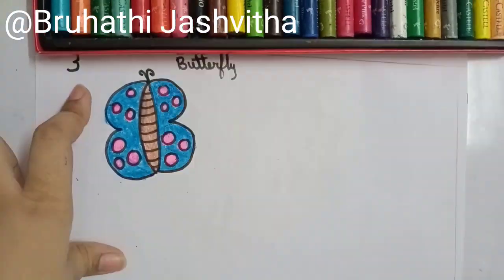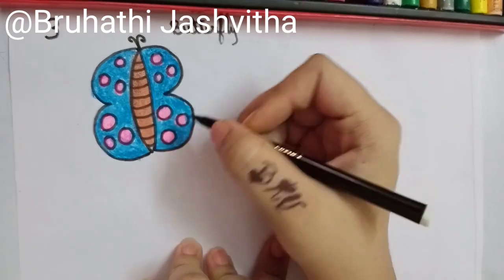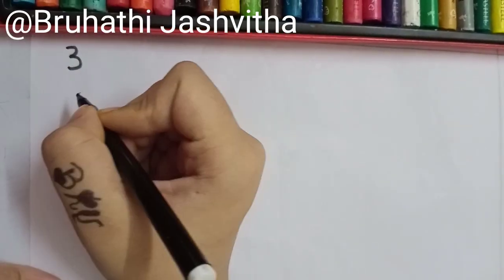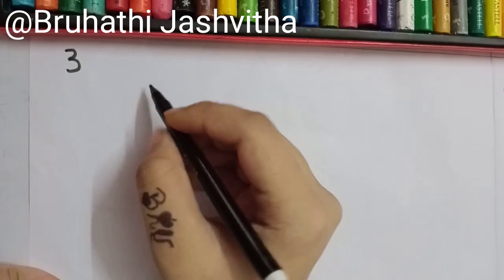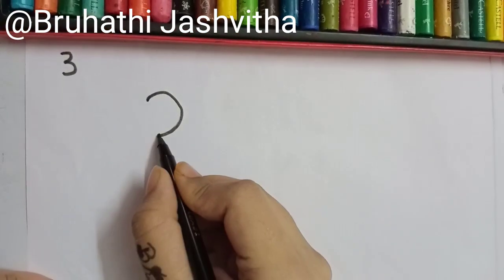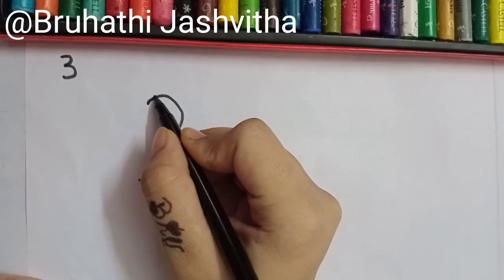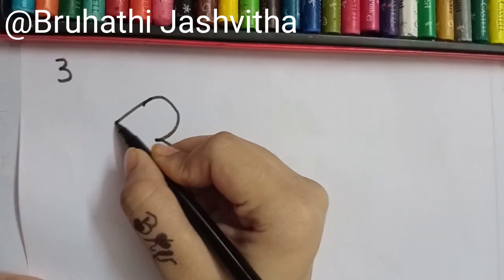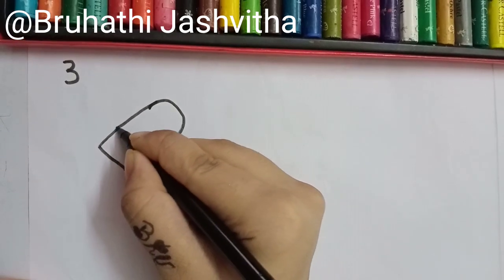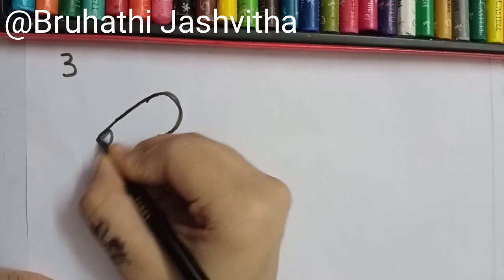Let us color it colorfully and beautifully. Now this number 3 is ready. It is going for its friend's party. This number 3 has went to its friend's party. This is number 3, and this is number 3's friend. So they met at the party. Finally, they have met at the party.